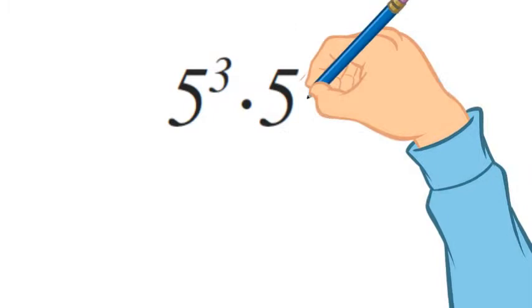5 to the 3rd is a power, and 5 to the 4th is a power, and multiplying them together is a product.